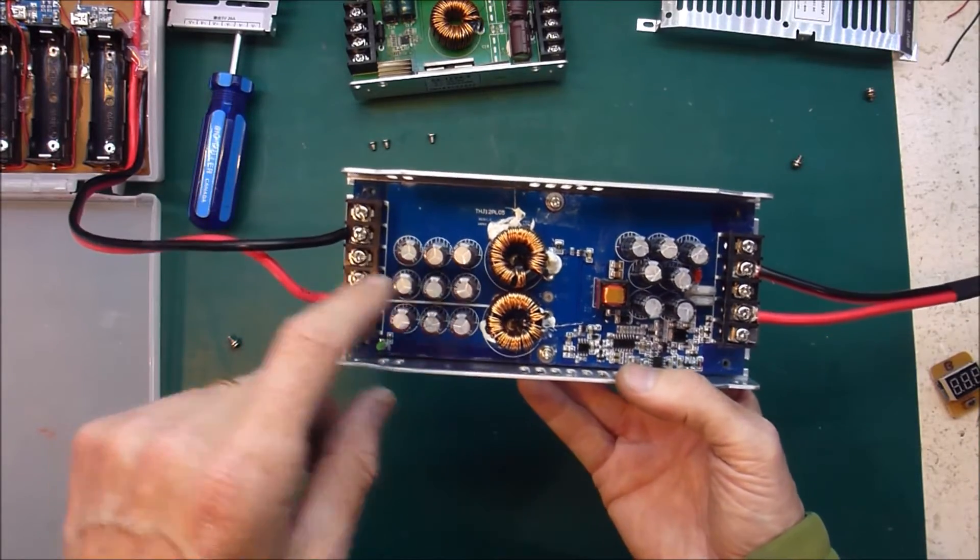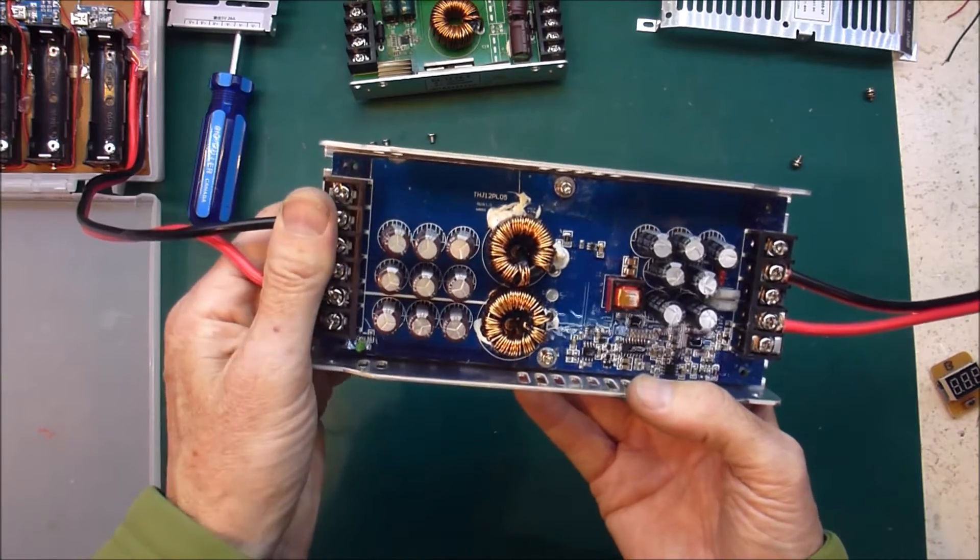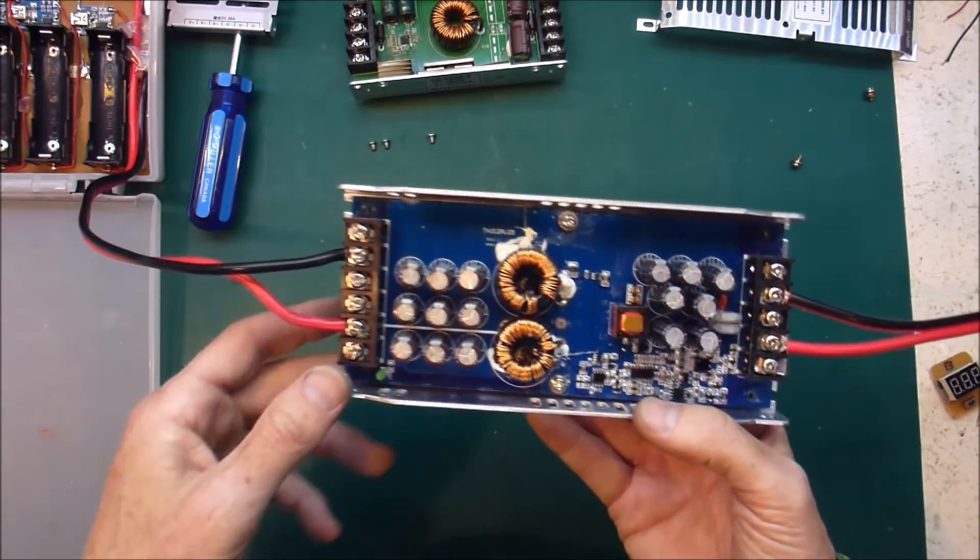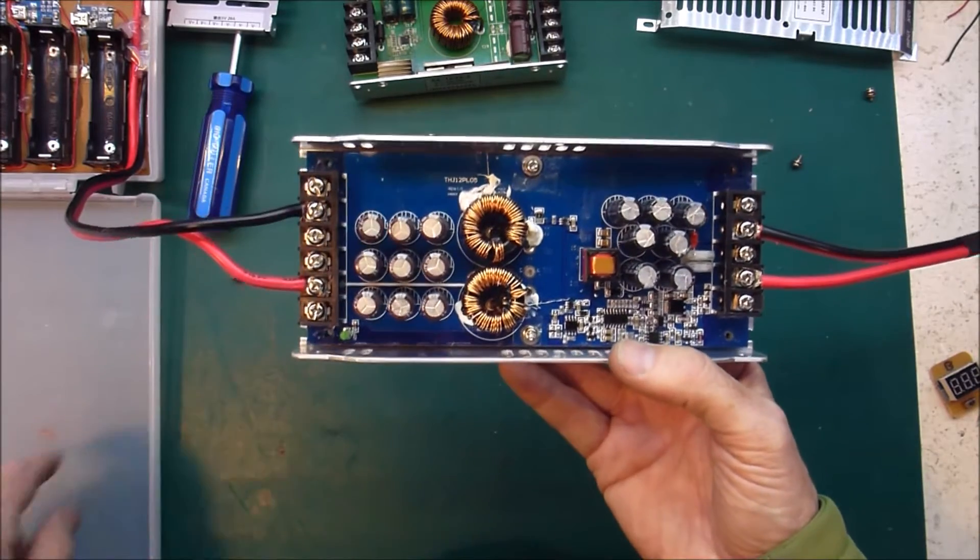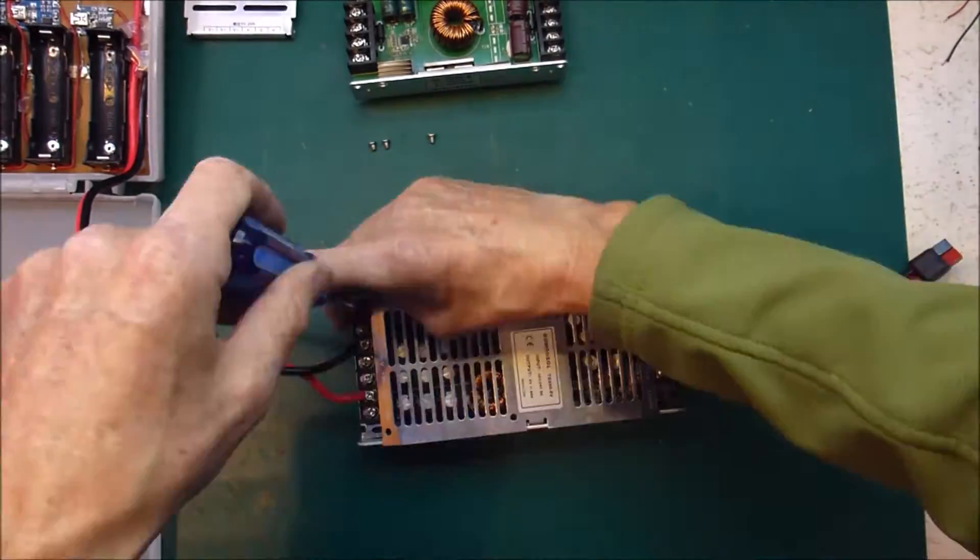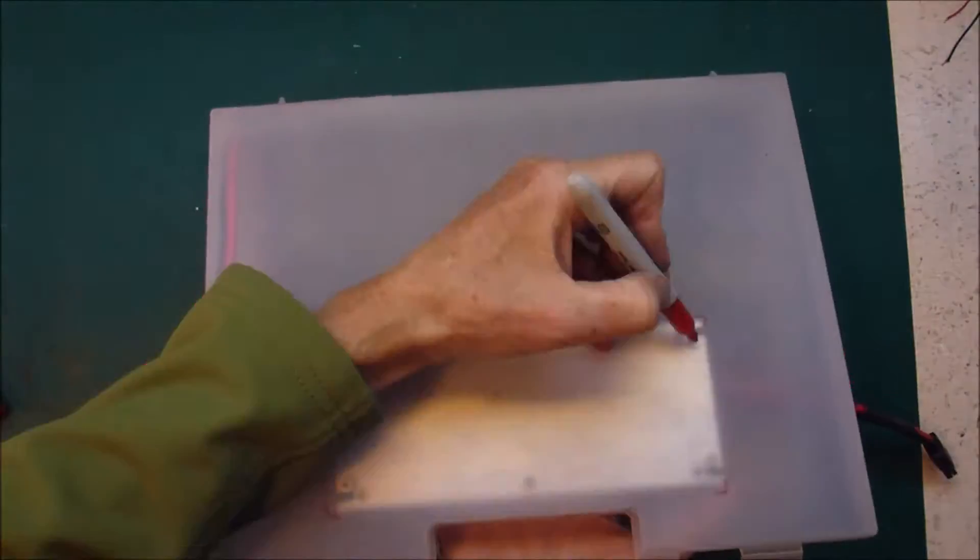So what I'm going to do next is put on a voltmeter on the output so that I always know what's going on, and then attach this to the lid of my charger box.